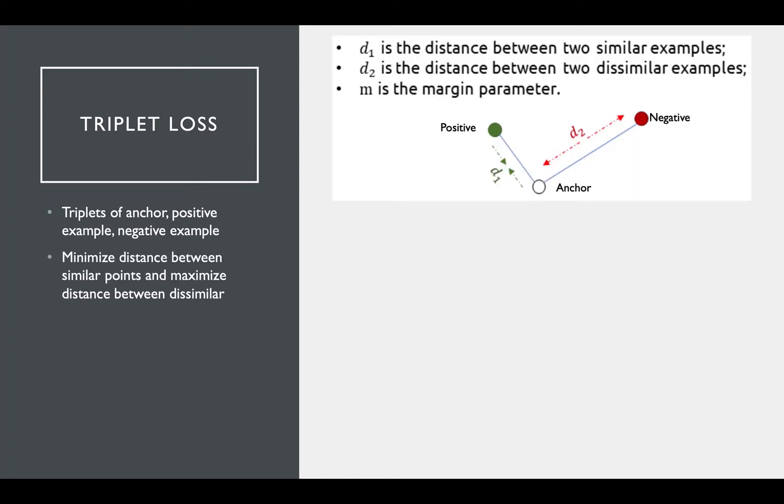The goal here is to minimize the distance between the anchor and the positive input, and maximize the distance between the anchor and the negative input, or at least make it outside the margin. Here's the formula.